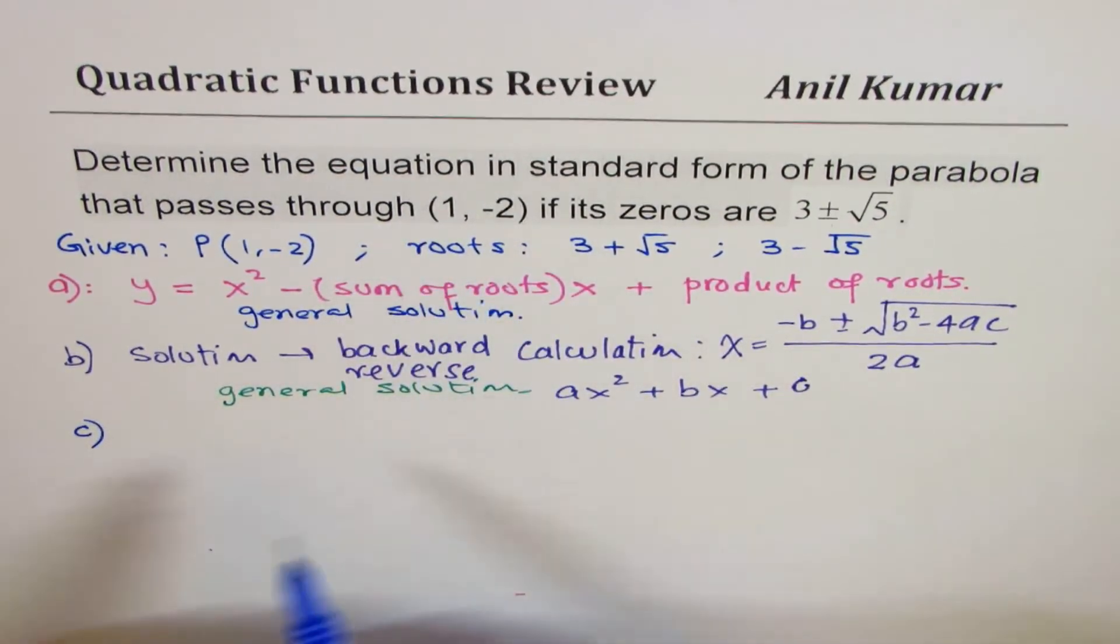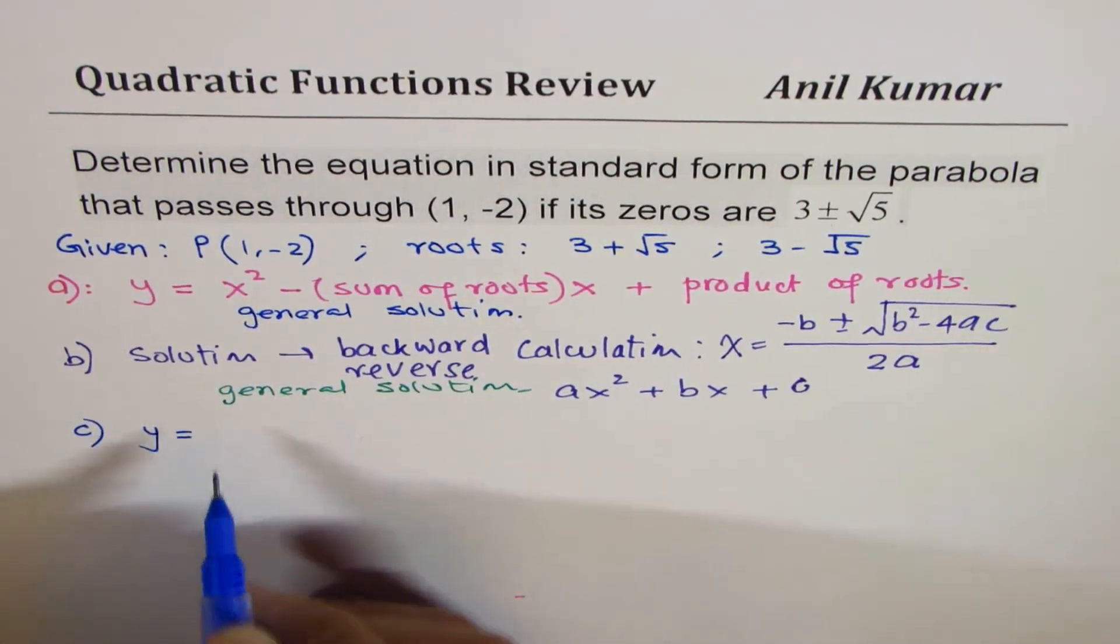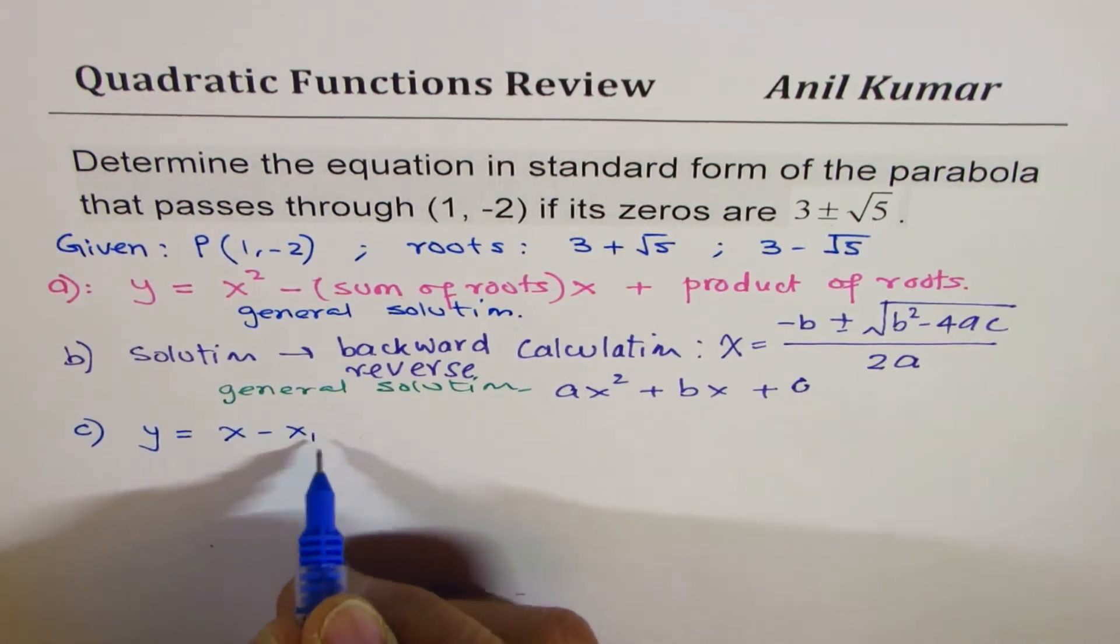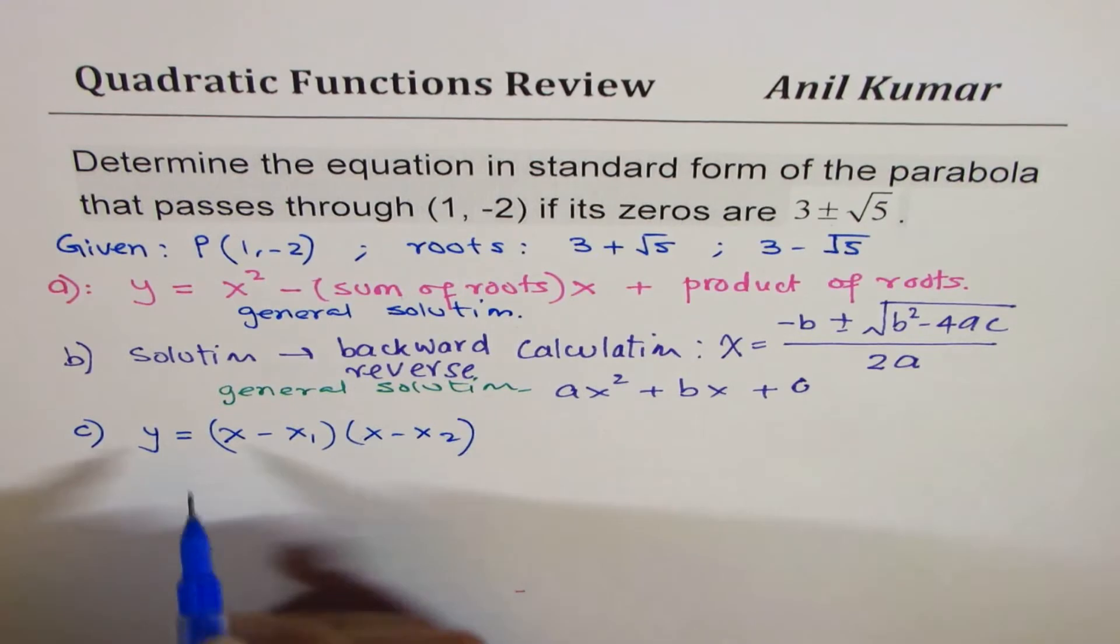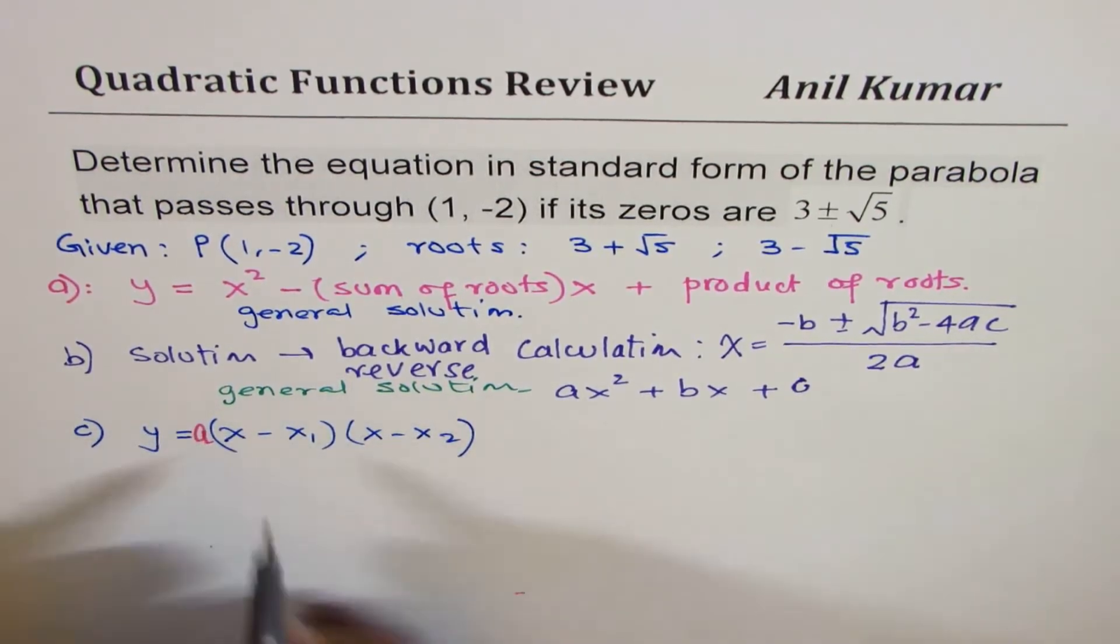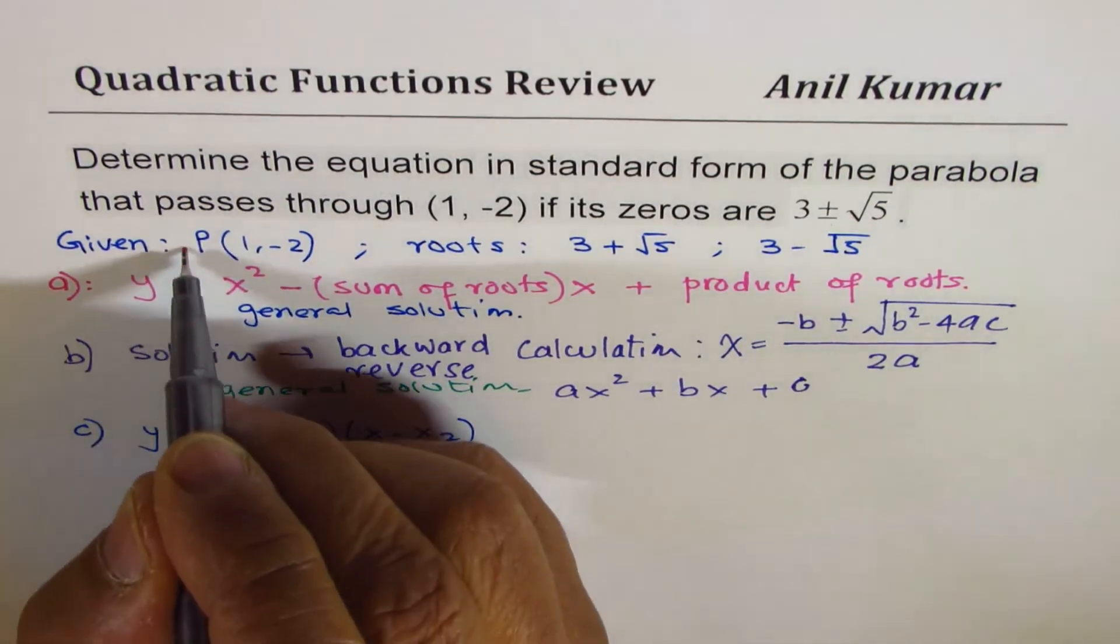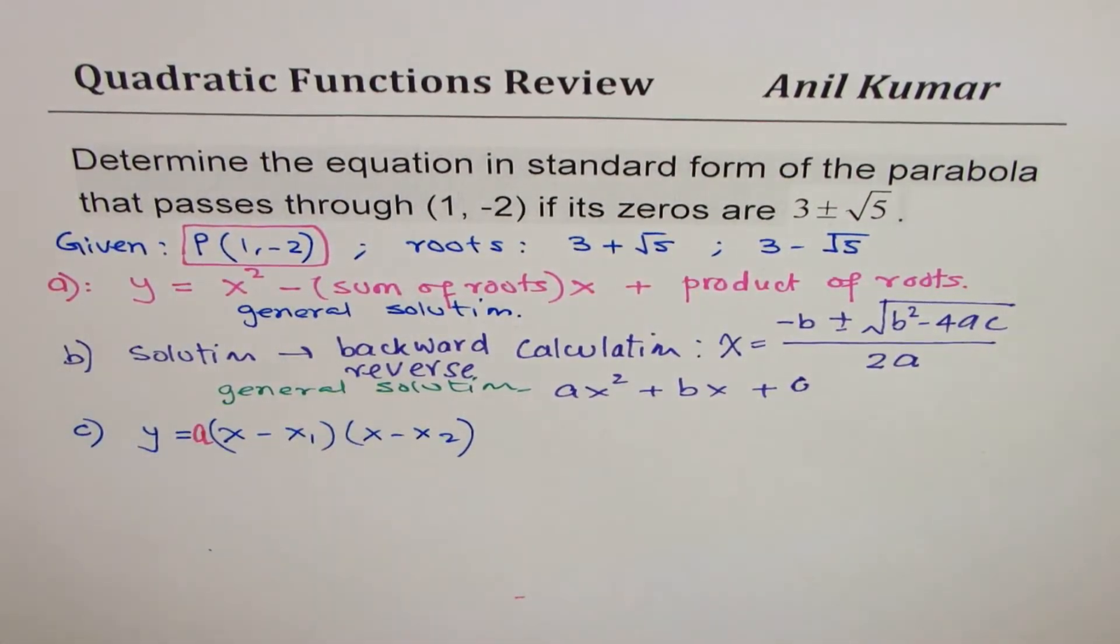Now we are going in for the third solution, which means we'll write the function y = a(x - first root)(x - second root), and everything times the factor a to make it specific since we have a point given to us.